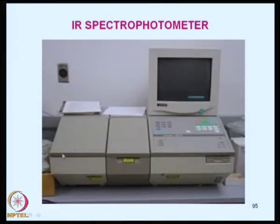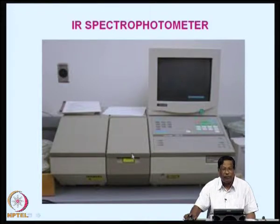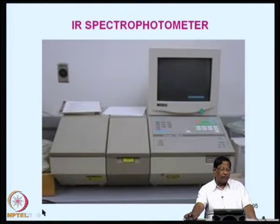A typical infrared instrument looks like a nice box: on the left side is the source, there is the sample compartment which opens up, along with the optics and a computer-controlled system. Such instruments are readily available in the market. Typical infrared analysis can be performed using the techniques discussed so far.